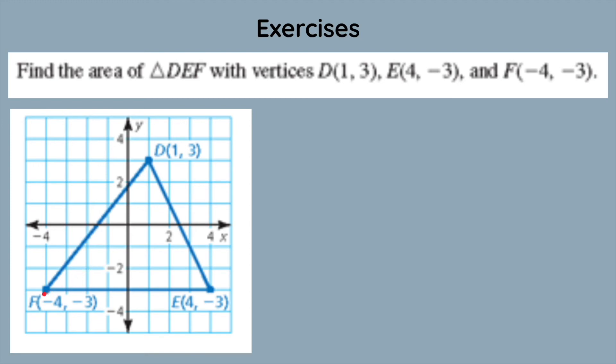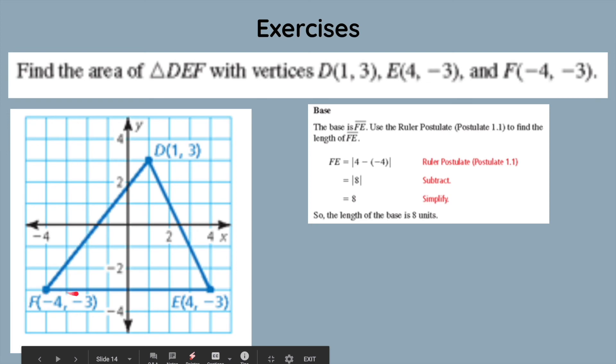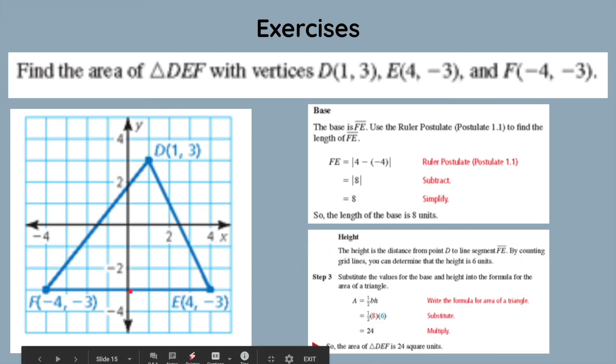Let's first start off with finding our base of FE. We can just count the units, 1, 2, 3, 4, 5, 6, 7, 8. We get 8 is the base, and then let's try finding the height. We can also count this, 1, 2, 3, 4, 5, 6. So, this is 6. Now we just multiply these two. 6 times 8 is 48, and we just divide it by 2, which totals to 24 square units. So, the area is 24 square units.